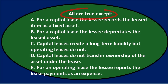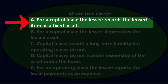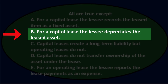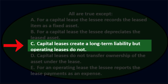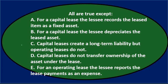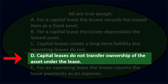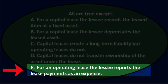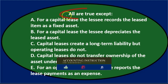First question — all are true except: A) for a capital lease, the leasee records the lease item as a fixed asset; B) for a capital lease, the leasee depreciates the leased asset; C) capital leases create a long-term liability but operating leases do not; D) capital leases do not transfer ownership of the asset under the lease; or E) for an operating lease, the leasee reports the lease payments as an expense.